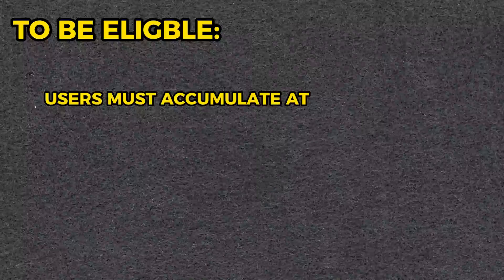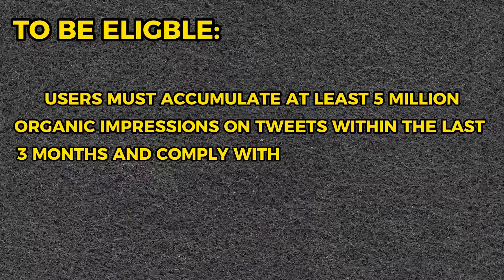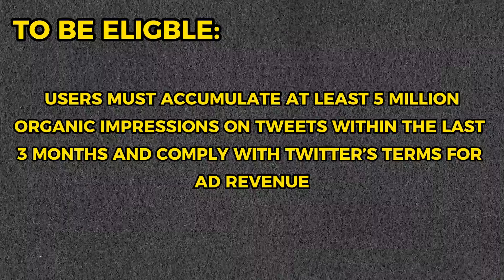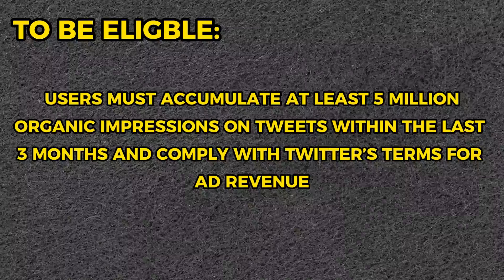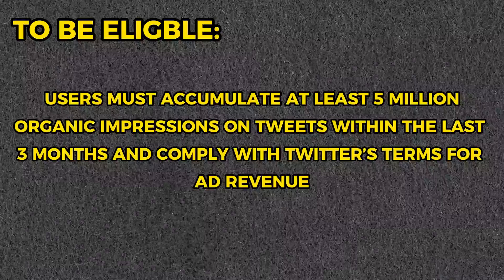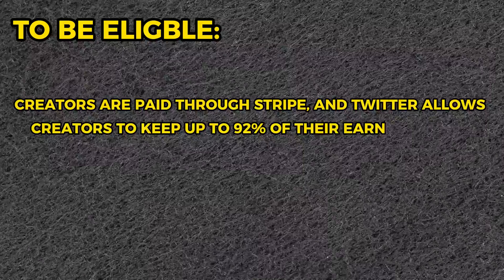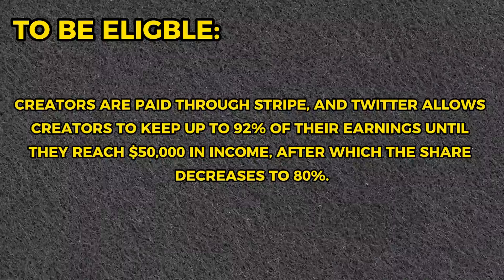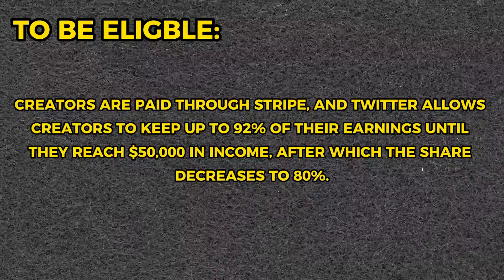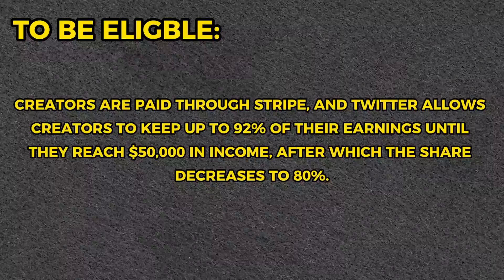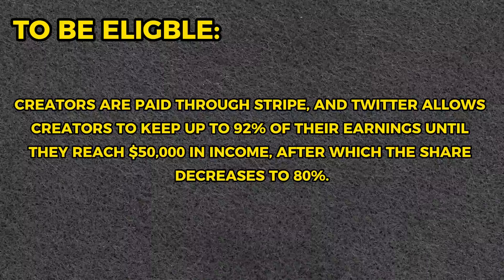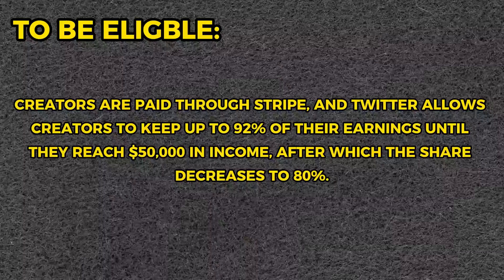To be eligible, users must accumulate at least 5 million organic impressions on tweets within the last three months and comply with Twitter's terms for ad revenue. Creators are paid through Stripe, and Twitter allows creators to keep up to 92% of their earnings until they reach $50,000 in income, after which the share decreases to 80%.